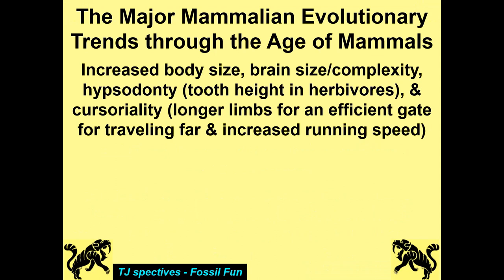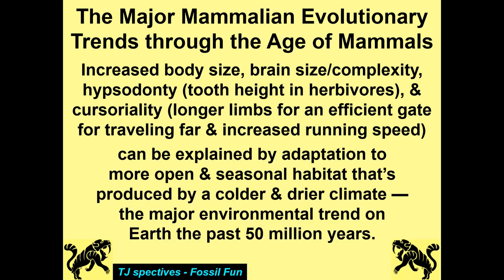The major mammalian evolutionary trends through the age of mammals and birds — the Cenozoic — are: increased body size, increased brain size and complexity, increased hypsodonty, increased cursoriality with longer limbs for an efficient gait for traveling far to get enough food, and increased running speed. If you burn too many calories getting food, you don't get enough calories and you starve to death. In open habitat, if you're a small to large mammal, long limbs really help. All of this can be explained by adaptation to more open and seasonal habitat, produced by a cold and drier climate — the major environmental trend of the Earth for the past 50 million years or so.